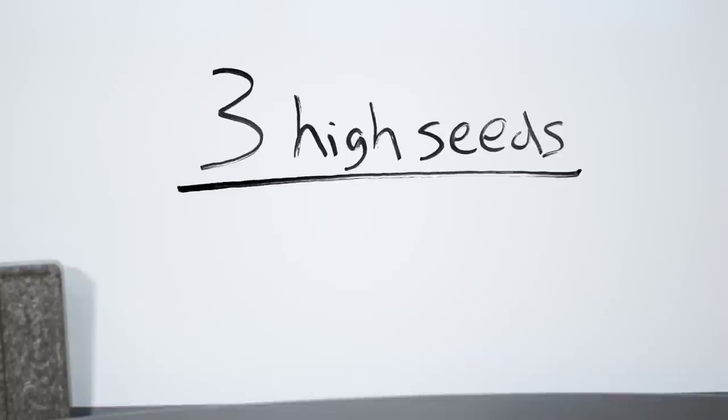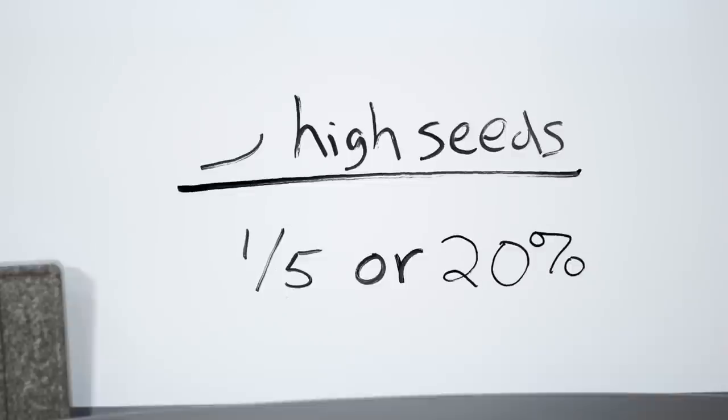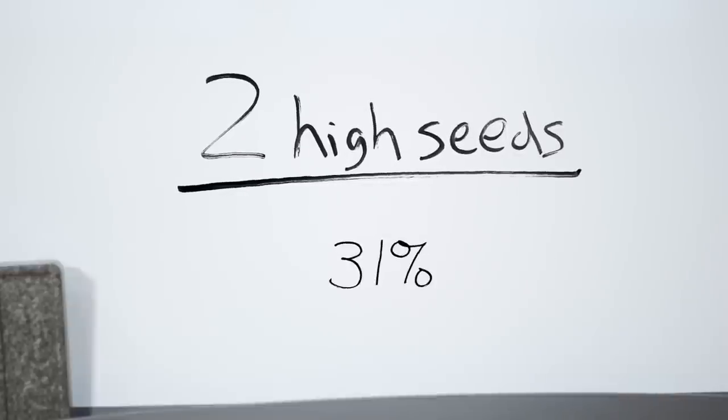If three top seeds make it to the Final Four, the odds of the lower seed winning is about one out of five. If two top seeds make it, the probability is about 31%. And if there's only one number one seed, the probability is about 42%.